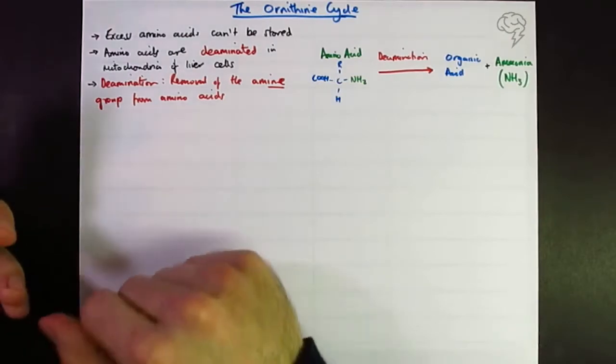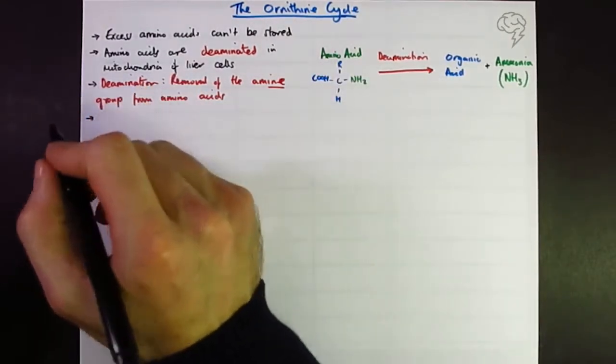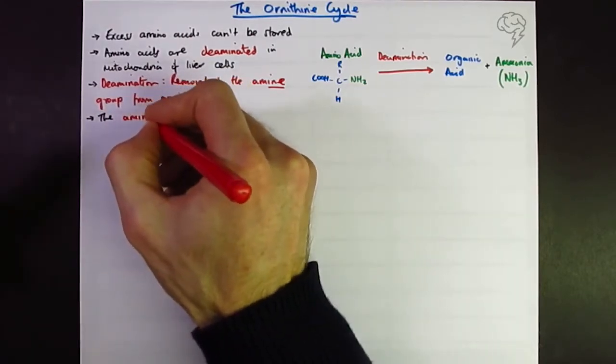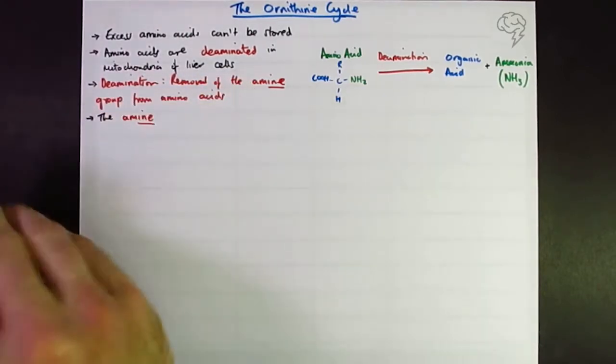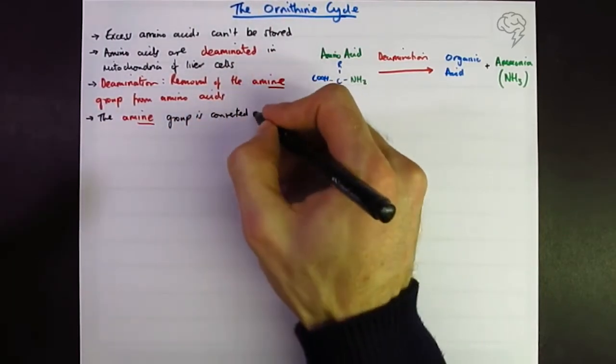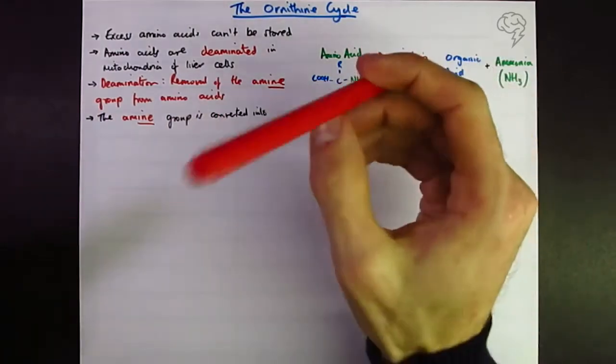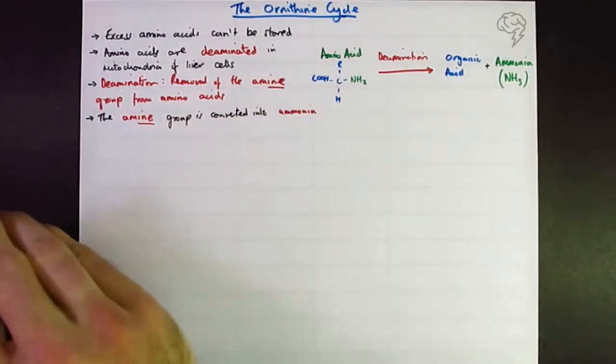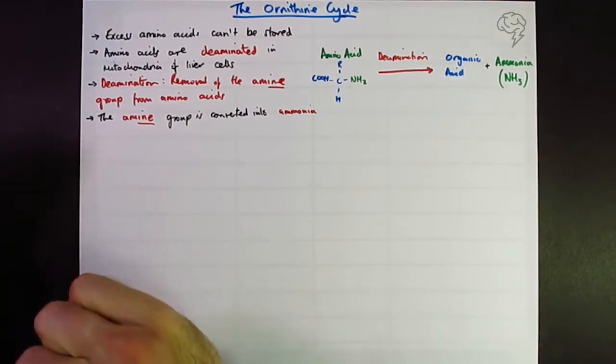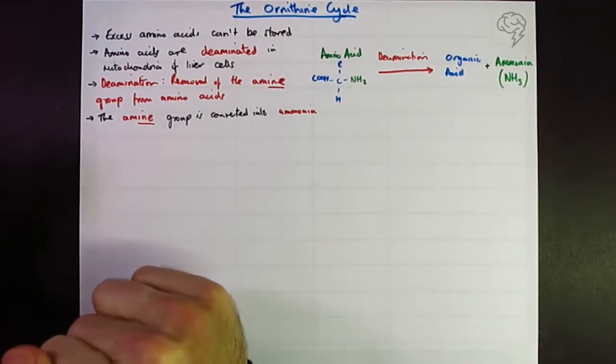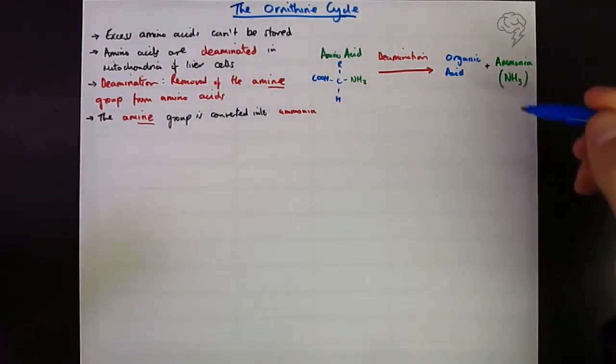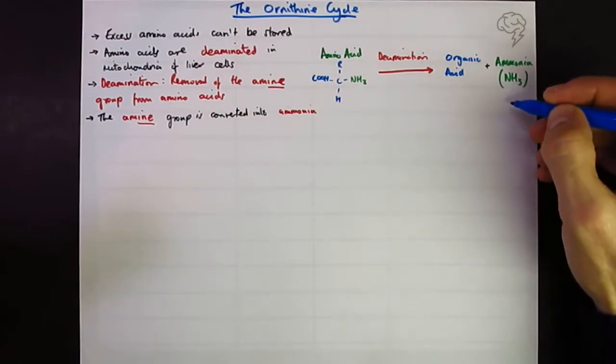Let's put a note down: the amine group is converted to ammonia. The ammonia enters the ornithine cycle and effectively it's converted to urea. That's the end product which is going to be removed by the kidneys.